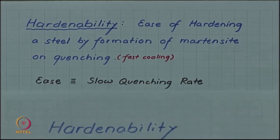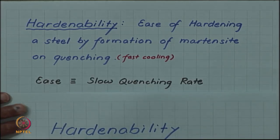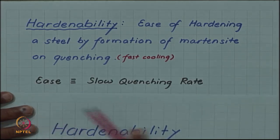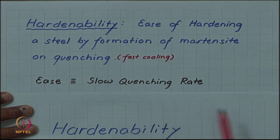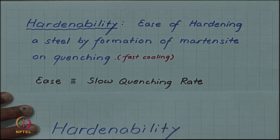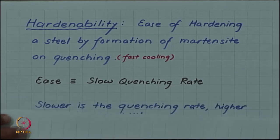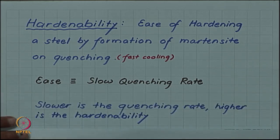The measurement of ease — or the definition of ease — is the slow quenching rate, which means the slower the quenching rate, the higher is the hardenability.